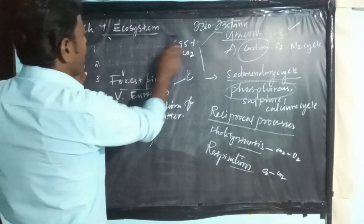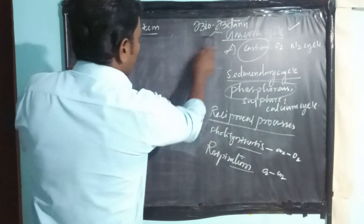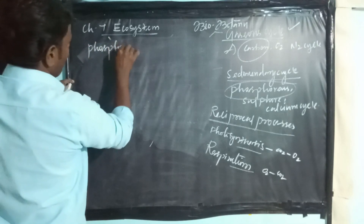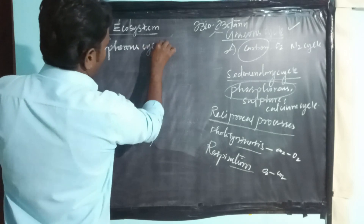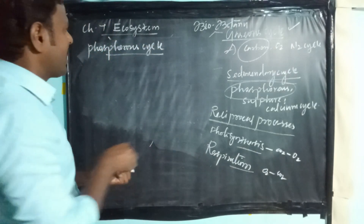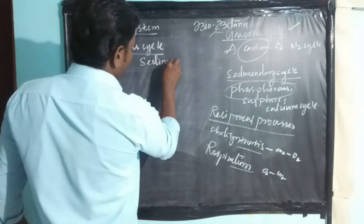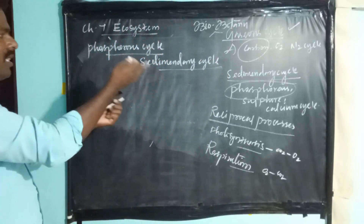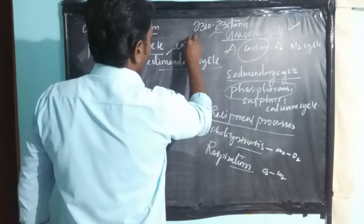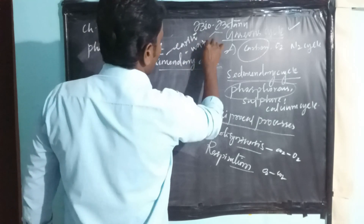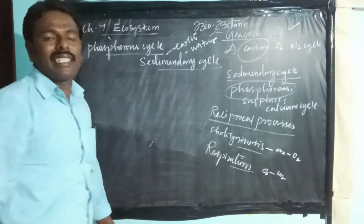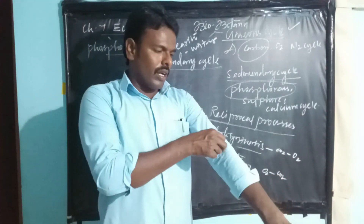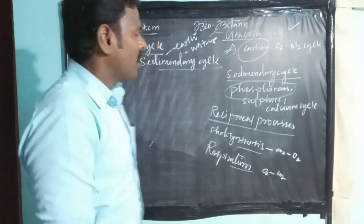Next, we are going to discuss the phosphorus cycle. It is one kind of sedimentary cycle. Basically, phosphorus is found in the earth or water regions — that is why it is a sedimentary cycle. We already know that phosphorus is found in biomolecules.